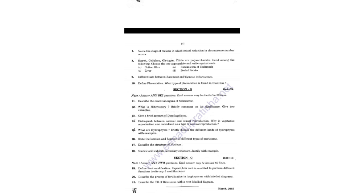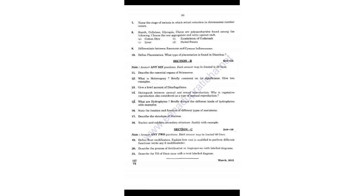In the 2015 question paper, the Section A very short answers include: 1st - differentiate population and community; 2nd - what is geocarpy; 3rd - what is paleobotany; 4th - give the main criteria used for classification by Whittaker; 5th - what is flora; 6th - mention a single membrane-bound organelle rich in hydrolytic enzymes; 7th - name the stages of meiosis in which actual reduction in chromosome number occurs; 8th - identify polysaccharides among starch, cellulose, glycogen, chitin; 9th - differentiate between racemose and cymose inflorescence; 10th - define placentation.